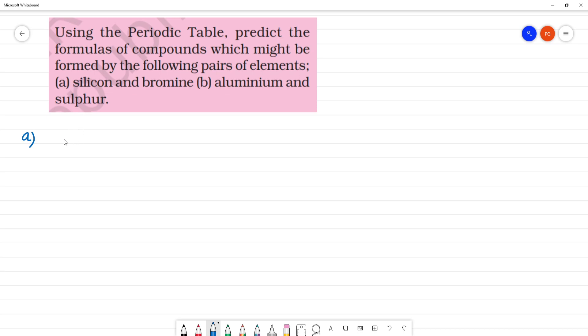Silicon belongs to what group? Group 14. Bromine, what group? Group 17.